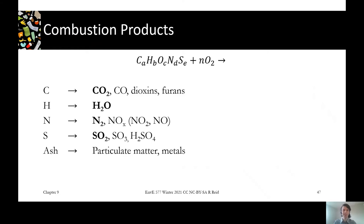Here's what we tend to get. Carbon tends to go all the way to carbon dioxide, which is our intended combustion product. We can have some incomplete combustion producing carbon monoxide as well as dioxins and furans. Dioxins and furans are highly toxic and it's very important that those are prevented from being formed or oxidized fully or removed from the flue gas. If we're doing our job, all our carbon will end up as carbon dioxide.